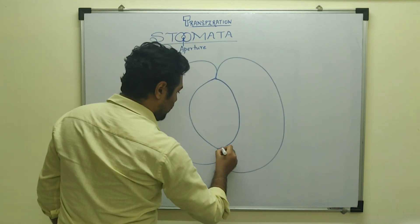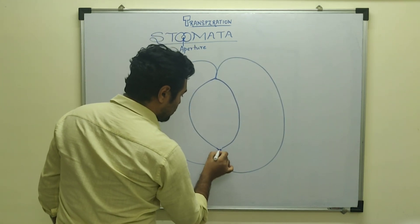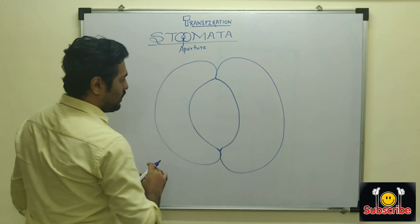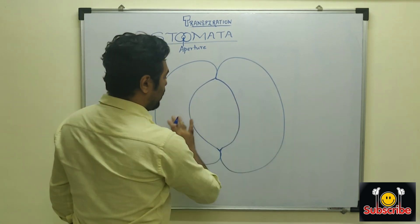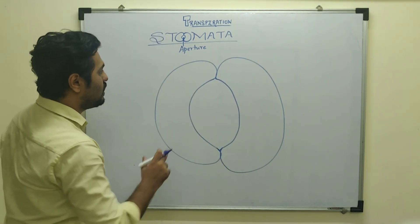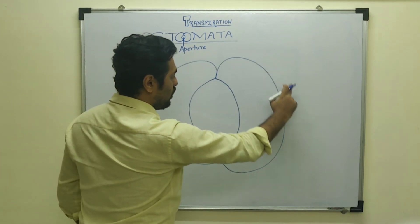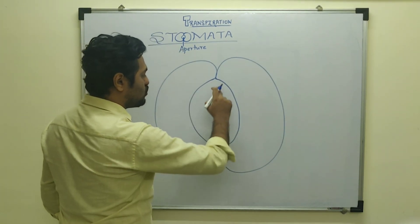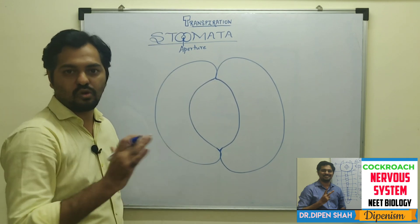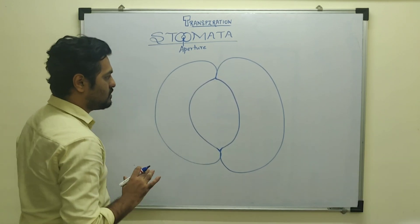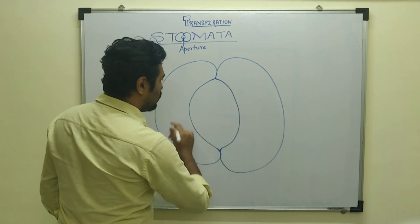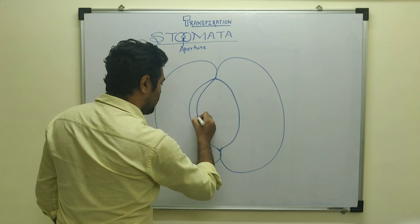If we represent the opening, this opening is surrounded by two guard cells which are kidney-shaped guard cells. The inner wall is concave and the outer wall is convex, giving it that kidney or concave shape.